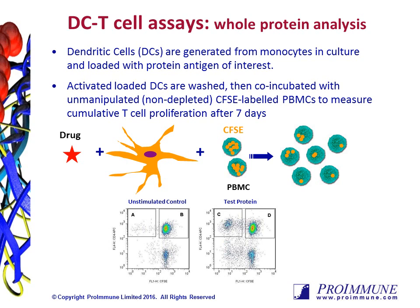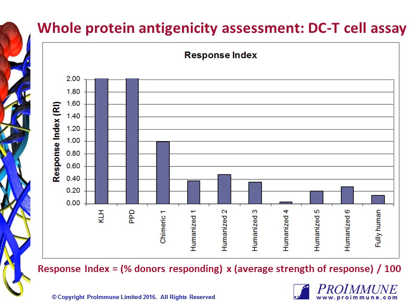In these representative dot plots, box C represents the proliferating CD4-positive CFSE-low T-cells in response to the test protein, which is compared with box A in the unstimulated control. Those CFSE levels are used to calculate a response index, which is the percent of donors responding multiplied by the average strength of response over 100. The data generated by the DC T-cell assay allows you to directly compare the relative T-cell epitope content among antibody variants and rank them accordingly. With this highly sensitive assay, even subtle differences can be detected — for example, a few amino acid differences.